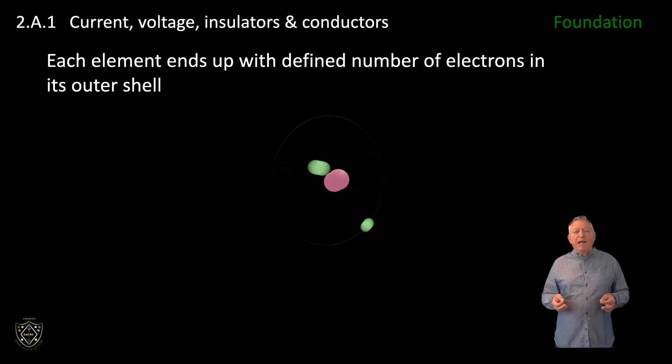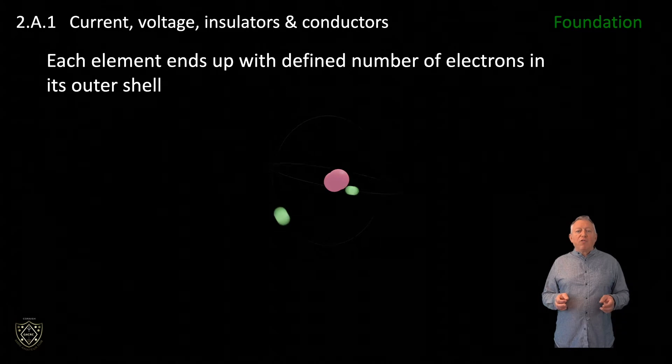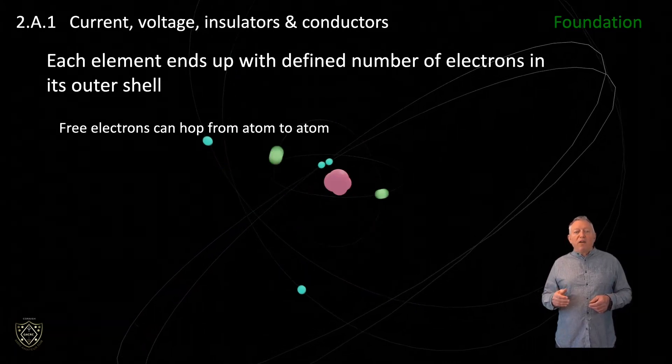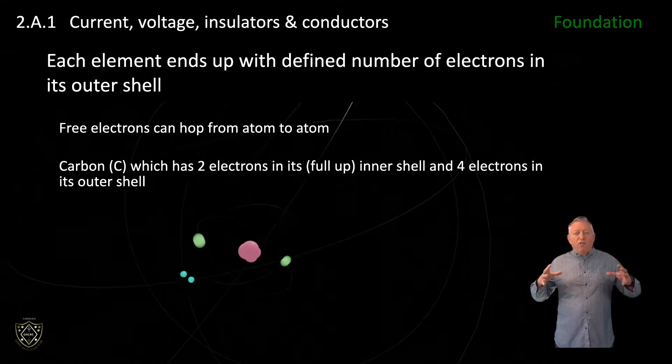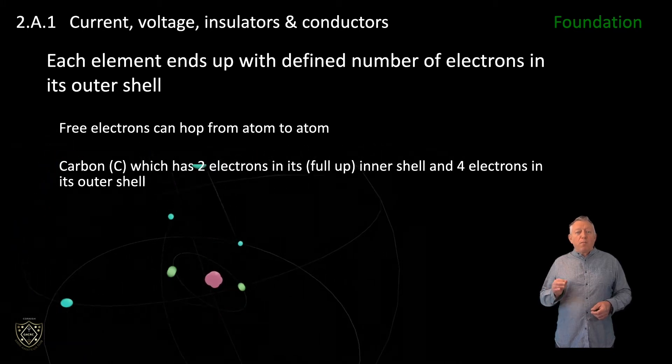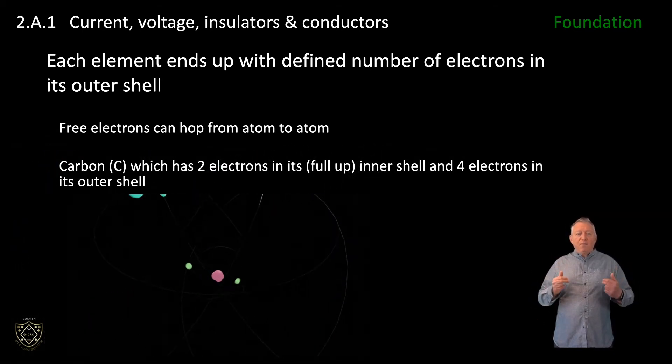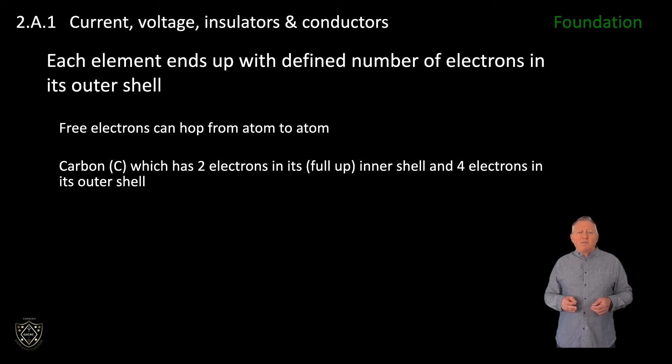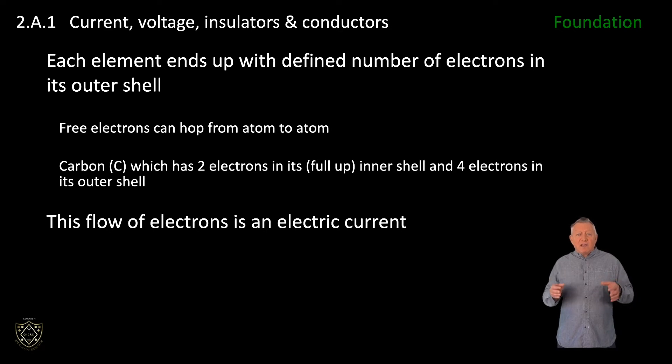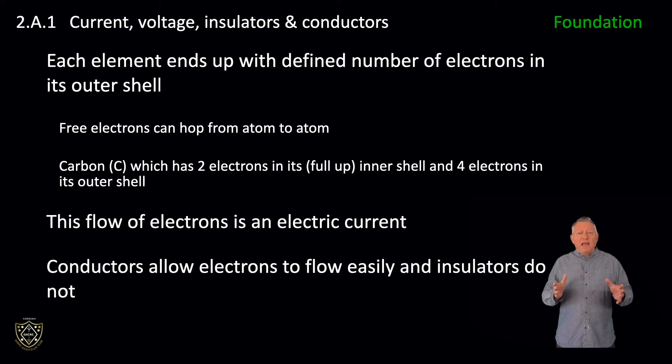This determines if the element has free electrons or not. Free electrons can hop from atom to atom. The graphic on the screen depicts carbon, which has two electrons in its full inner shell and four electrons in its outer shell, which, because it is not full, is free to receive and pass on electrons from neighboring atoms. This flow of electrons is an electric current. If an element has free electrons, it is a conductor of electricity. If the shell is occupied and the electrons are tightly bound to the nucleus so that no gaps exist for the temporary accommodation of free electrons from neighboring atoms, it is an insulator.